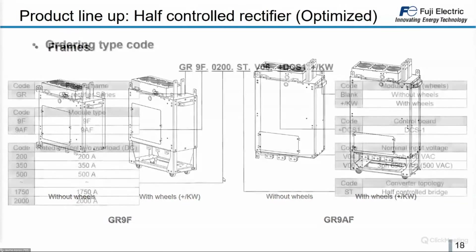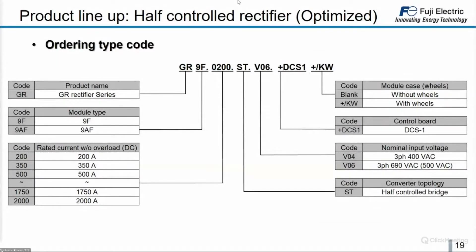Looking at the ordering type code, an important digit is the rated current without overload on the DC part of the module — on the output of the optimized rectifier, this goes from 200 A up to 2000 A. Another important point is the voltage supply: 3-phase 400 V or 3-phase 690 V. The 690 V module can also be supplied with 500 V AC, making this product suitable for applications with 3-phase 500 V.